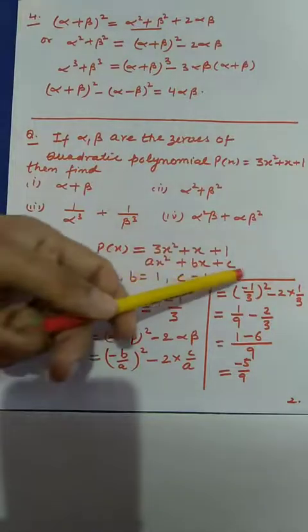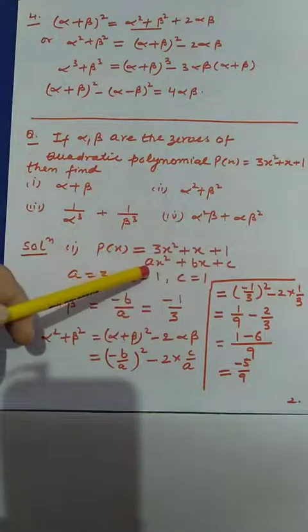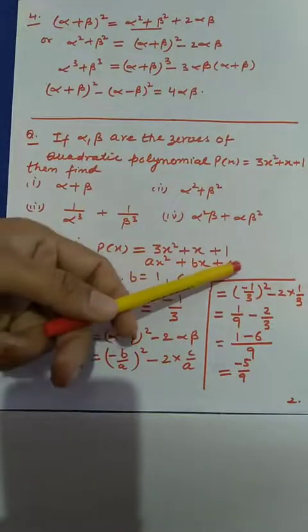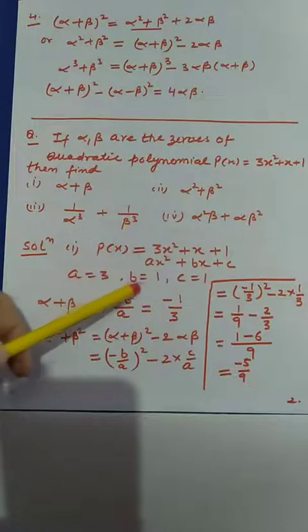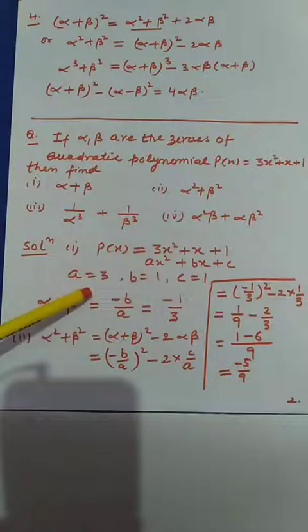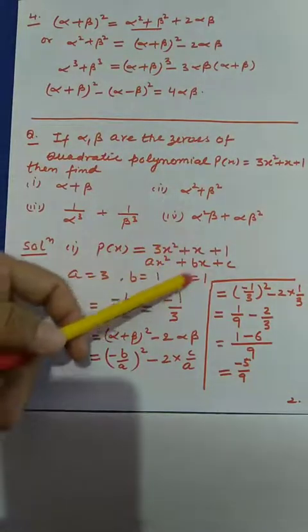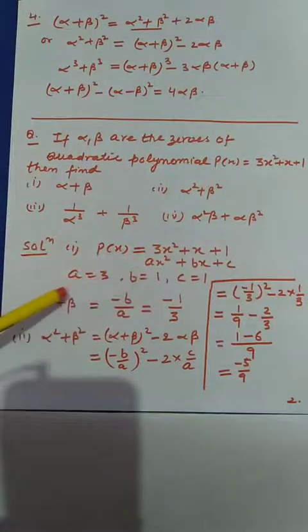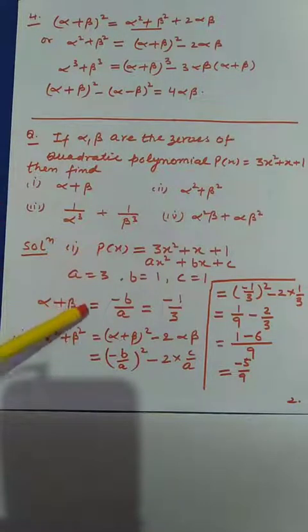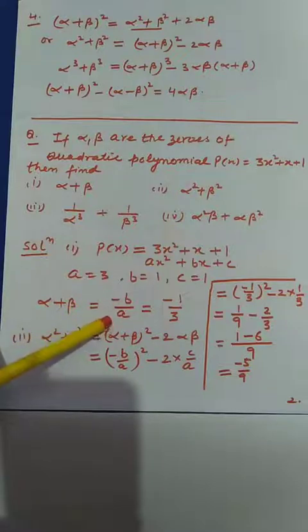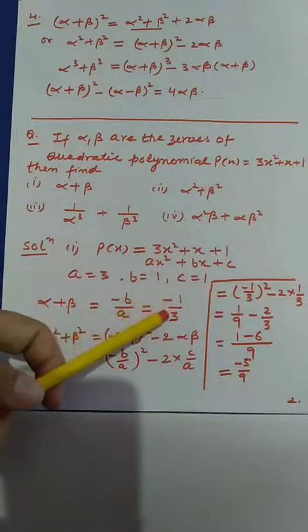Then we compare it with the standard polynomial ax² plus bx plus c. After comparing, we get a equals 3, b equals 1, and c equals 1. From the given polynomial, alpha plus beta equals minus b divided by a, so alpha plus beta comes out to be minus 1 divided by 3. Similarly, alpha·beta equals c divided by a, which gives 1 divided by 3.